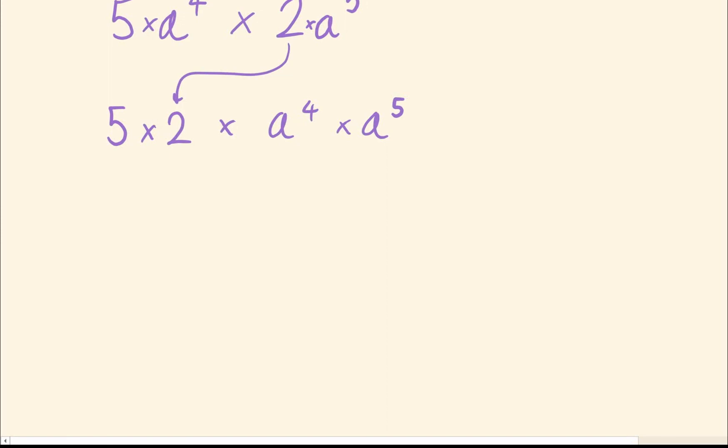Now we can do the exact same thing. 5 times 2 gives us 10. a to the 4 times a to the 5. Well, here we want to add the powers, and 4 plus 5 is 9. So it would be 10a to the 9, or 10 times a to the 9, redundantly.